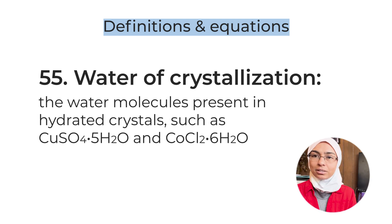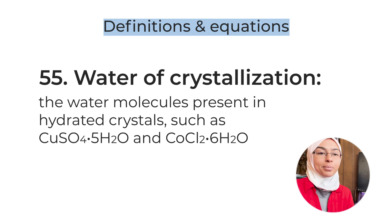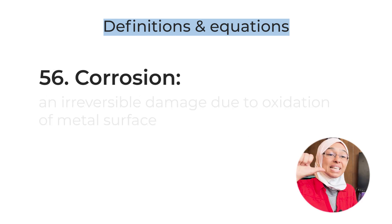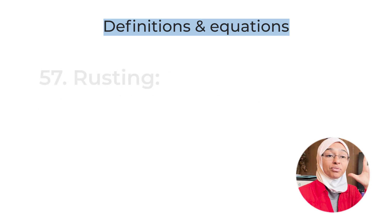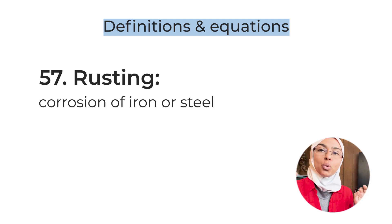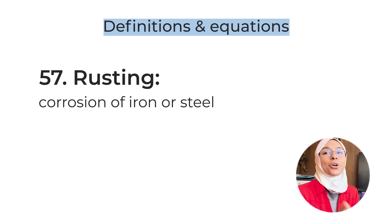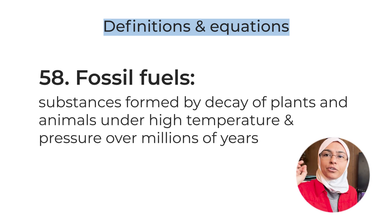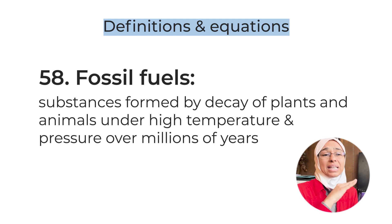Definition number fifty-six: corrosion — irreversible damage due to the oxidation of a metal surface. Definition number fifty-seven: rusting — the corrosion of iron or steel specifically. We only call it rusting if it involves iron or steel; for other metals like magnesium, zinc, or copper, we call it corrosion. Definition number fifty-eight: fossil fuels — substances formed by the decay of plants and animals under high temperature and pressure over millions of years. Not a super common question, but easy to answer if it appears.